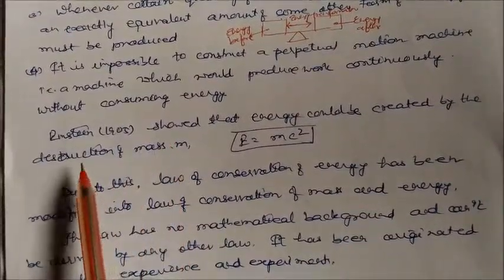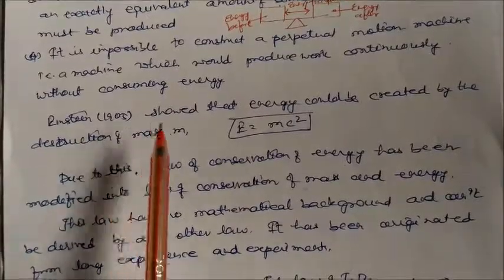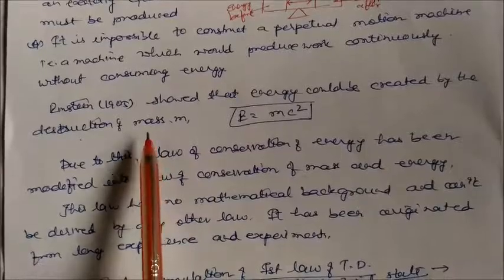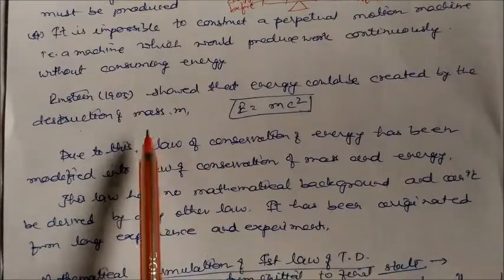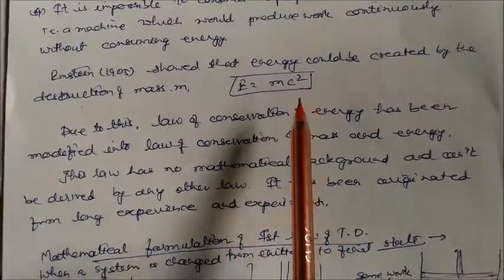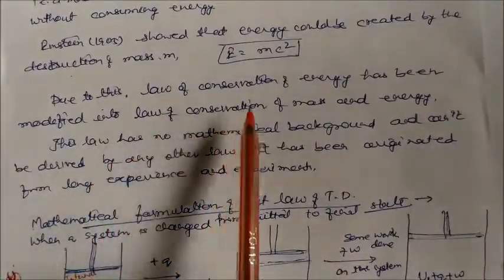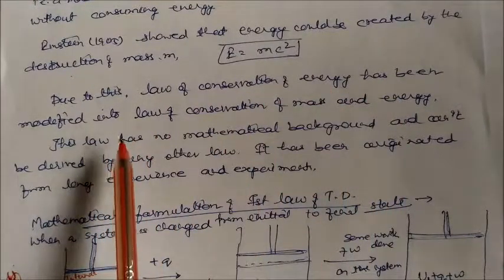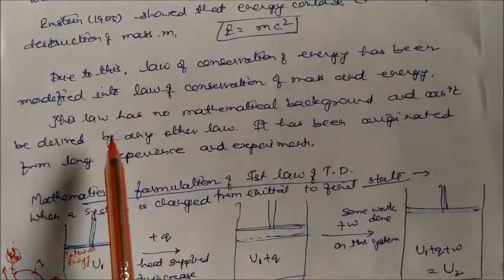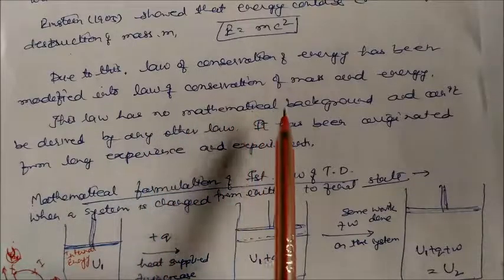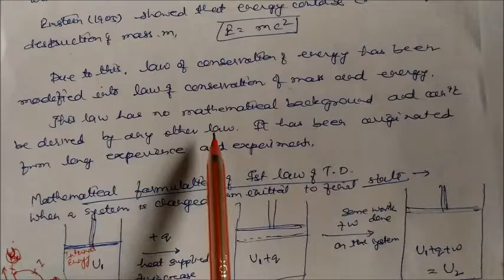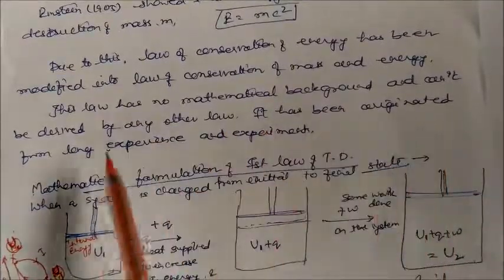Einstein in 1905 showed that energy could be created by the destruction of mass: E = mc². Due to this, the law of conservation of energy has been modified into the law of conservation of mass and energy. This law has no mathematical derivation and has originated from long experience and experiments.